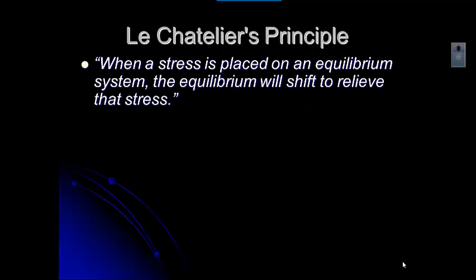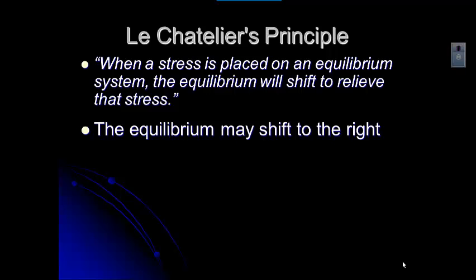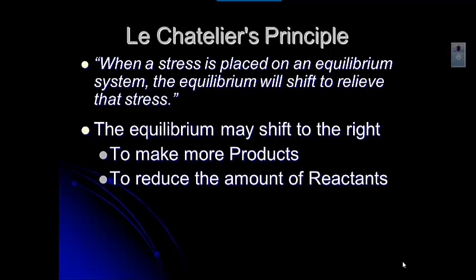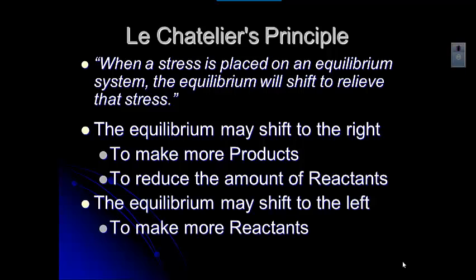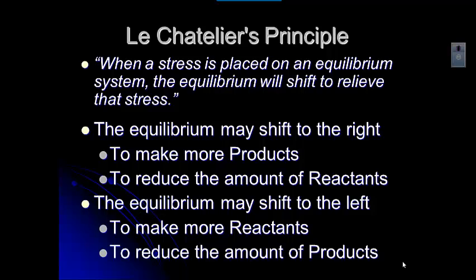So let's look at what Le Chatelier's Principle says. It says when a stress is placed on an equilibrium system, the equilibrium system will shift to relieve that stress. It may shift to the right to make more products or to reduce the amount of reactants, or it could shift to the left, which would make more reactants or reduce the amount of products. The key is identifying the stress and then figuring out which way the equilibrium will shift.